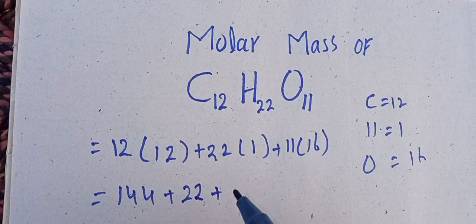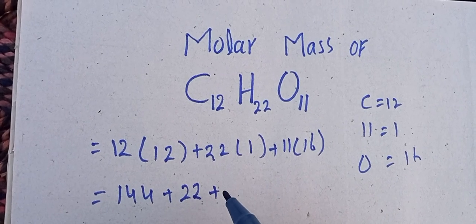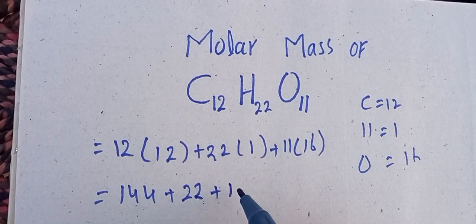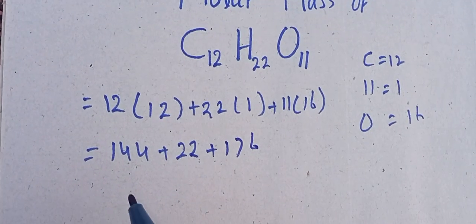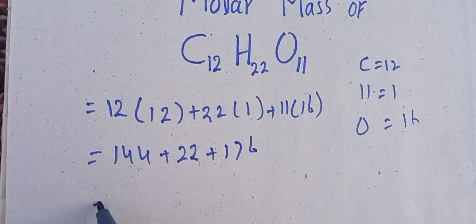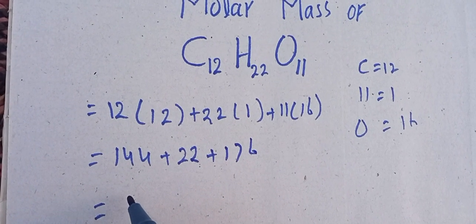Plus 11 multiplied by 16 equals 176. After the addition of all these values, the sum is 342 grams per mole.